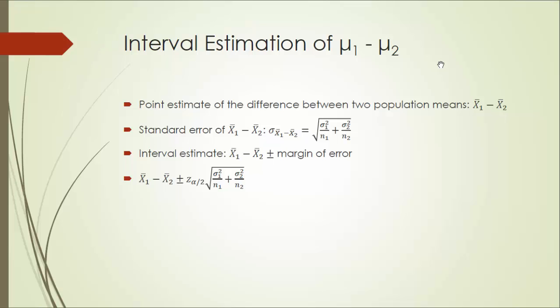And the interval estimate is given by x1 bar minus x2 bar plus minus margin of error. And here's how margin of error is defined, which is the critical z-score times the standard error. It's very similar to what we did in previous chapters. It's just that the definition of standard error is different. Here, we have to take into account two populations and two samples.